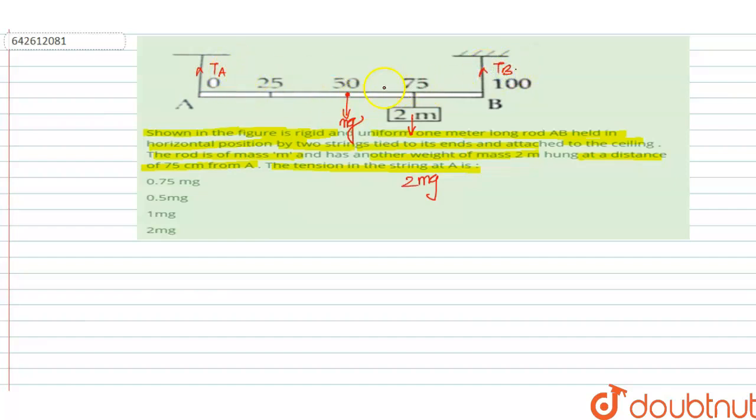First, balance the forces. We can write Ta plus Tb is equal to Mg plus 2Mg.